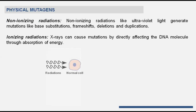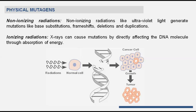In non-ionizing radiations, ultraviolet light generates mutations like base substitution, frameshift, deletion, and duplications. Whereas X-rays can cause mutation by directly affecting the DNA molecule through absorption of energy. In this example, radiation makes a normal cell cancerous — radiation breaks or disturbs the genetic material, turning it into a cancerous cell that will proliferate and lead to tumor formation. That mass of proliferating cells leads to tumorigenesis, or a cancerous condition.